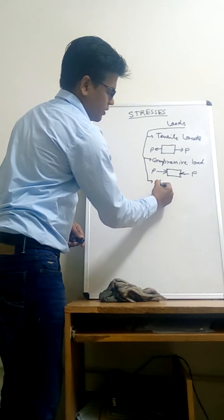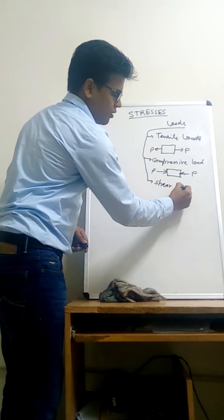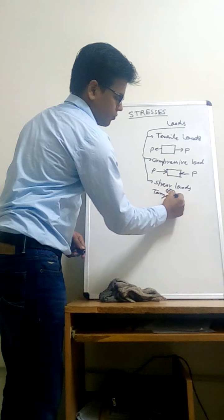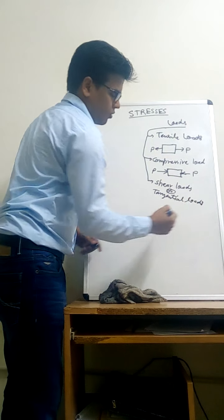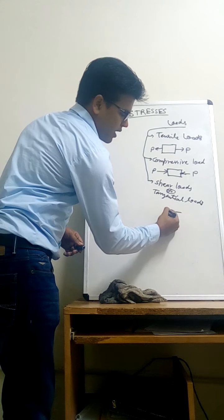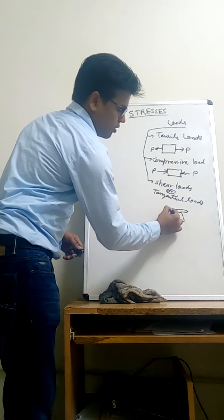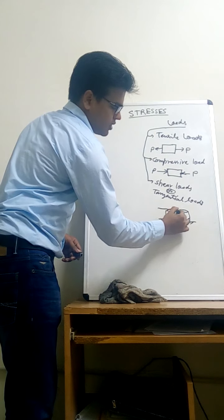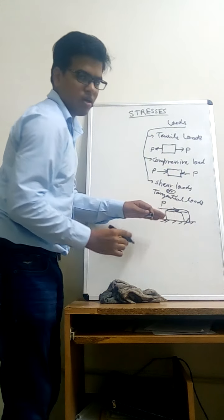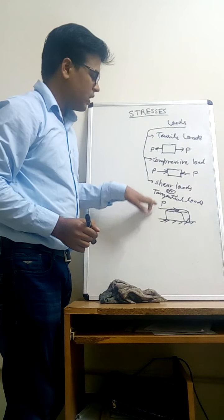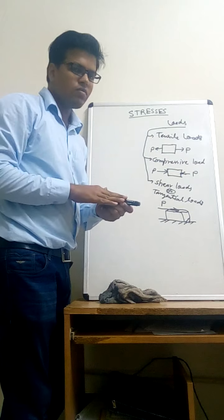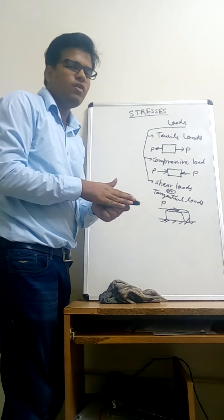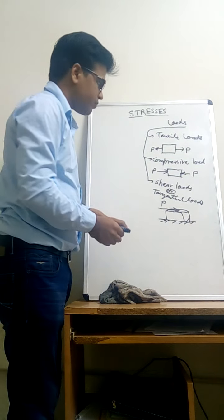The third type of loads are shear loads, also called tangential loads. Tangential loads act parallel to the surface of any body. If it is a block and a force is acting parallel to the surface, then this force is called a tangential load, shear load, or shear force. Similarly, if I apply a load parallel to the surface of this marker, that force will be a shear load or tangential load on this marker.